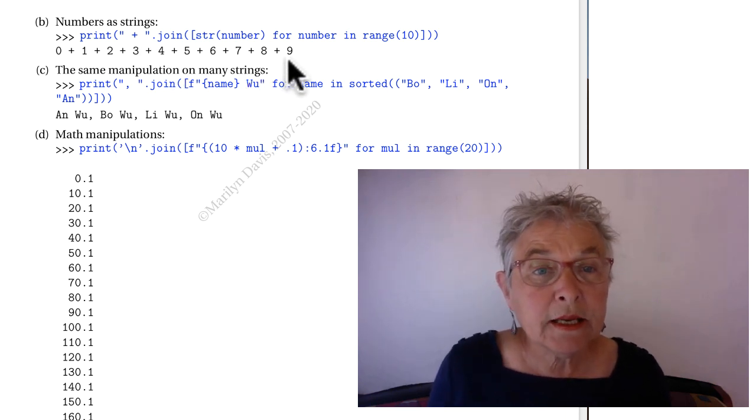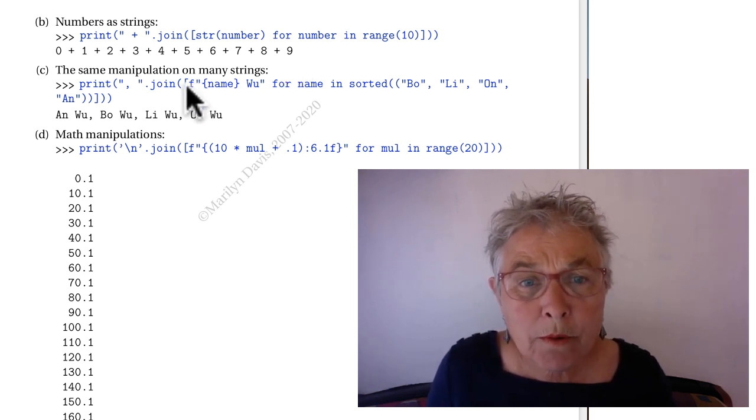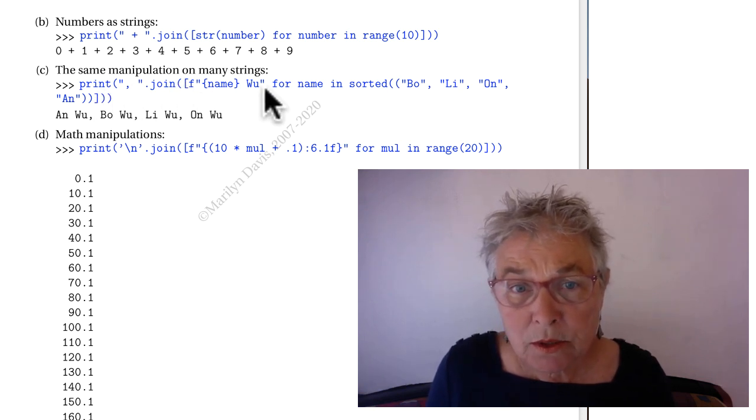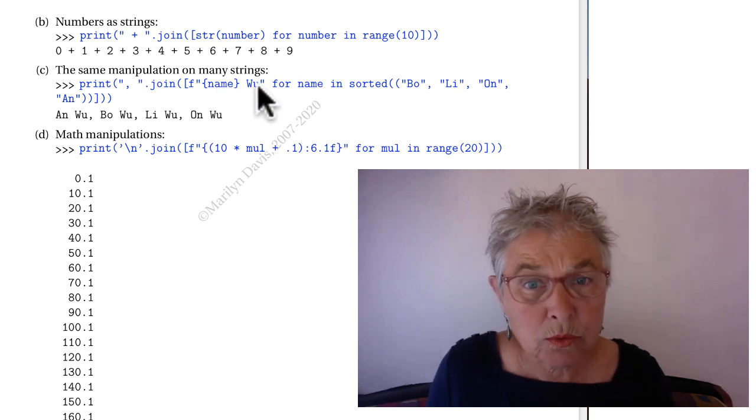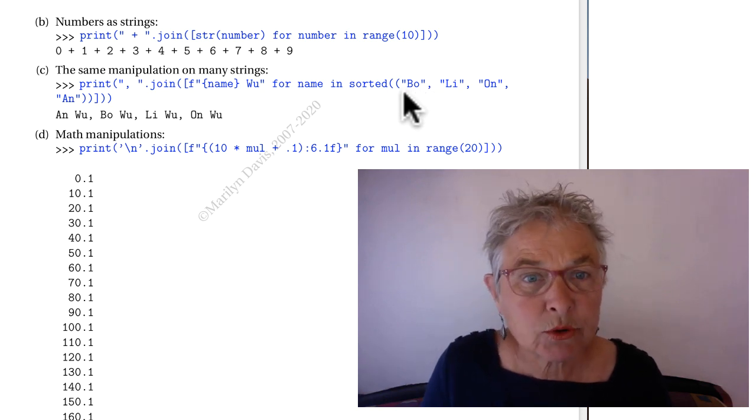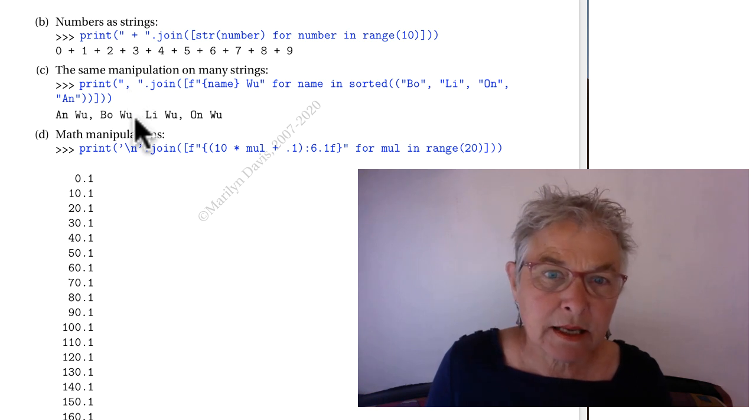Looking at C, we see that here's our list comprehension and this is our pattern. We are doing a formatted string for our list elements, the name and the wu and wu. We're making all of those through the sorted tuple of the names and we're joining them together with comma space and that's how they look.